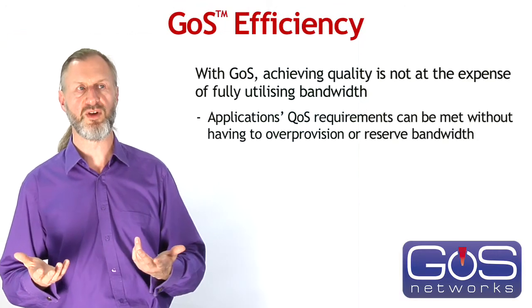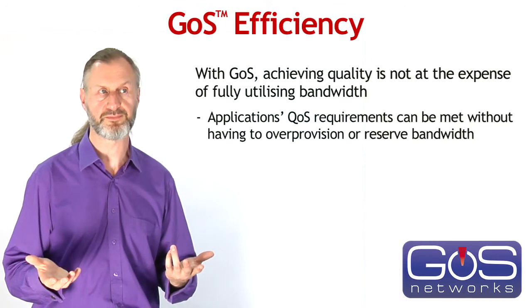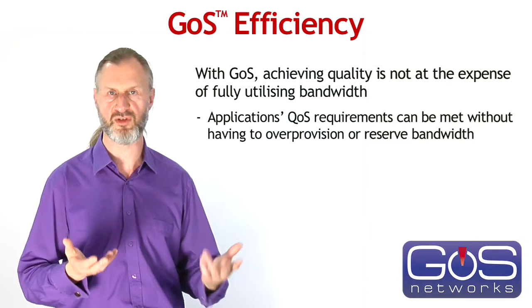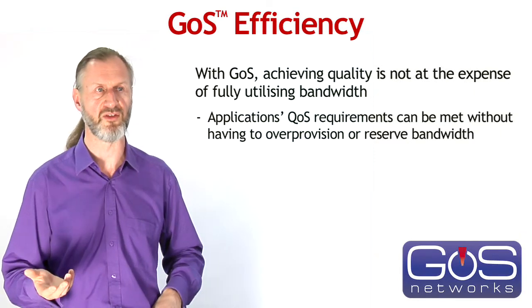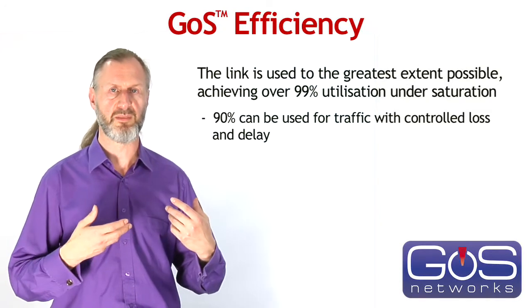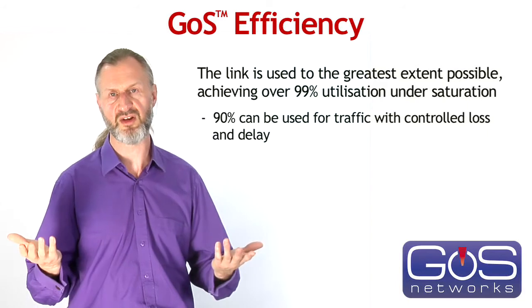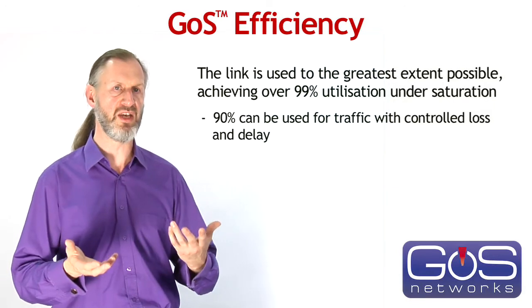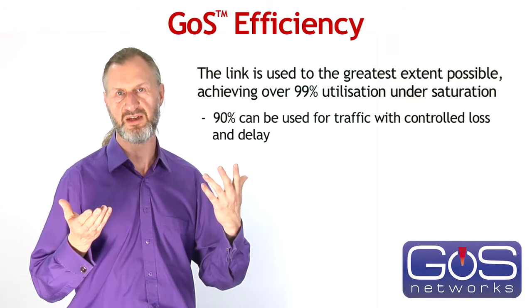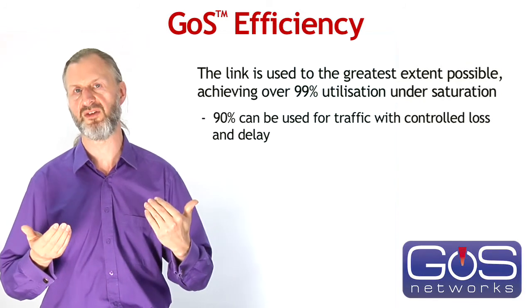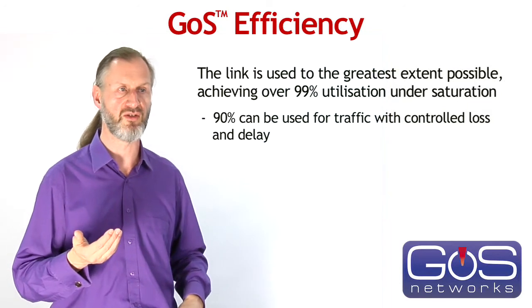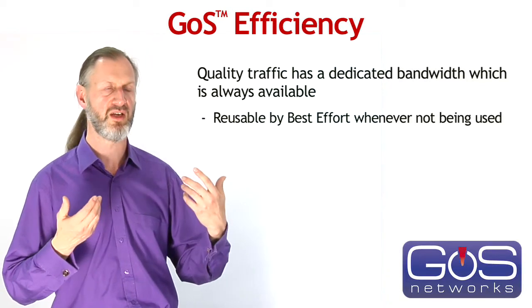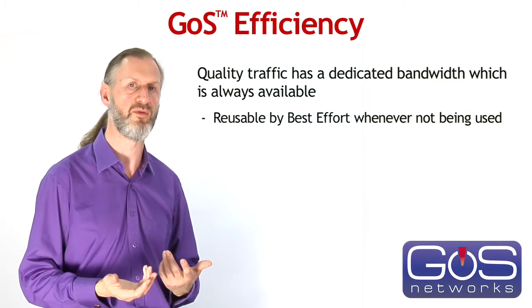GOSS is very efficient in its use of resources — achieving quality is not at the expense of fully utilizing bandwidth. Multiple application QoS requirements can be met without having to over-provision or reserve excess bandwidth to deal with occasional events. The link can be fully utilized. By filling in with best-effort traffic we can utilize 99% of the whole capacity, and we can use 90% of the traffic for applications that need guaranteed QoS — good guarantees on loss and delay even under saturation. For each class of quality traffic there is a bandwidth reservation it can use when needed; when it doesn't need it, the capacity is available for best-effort traffic.